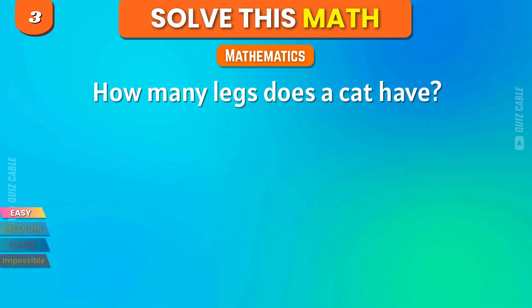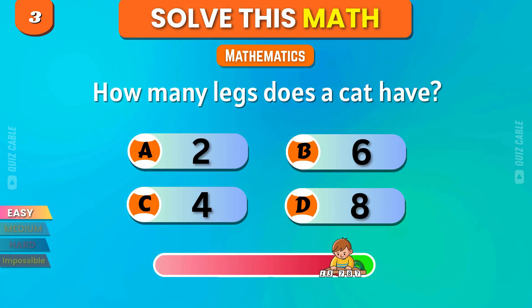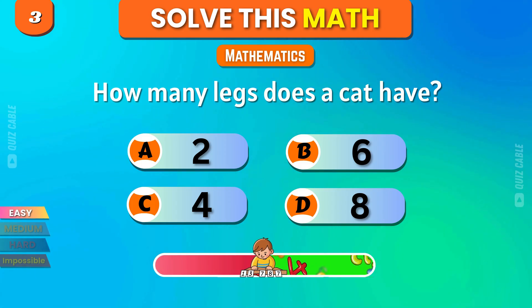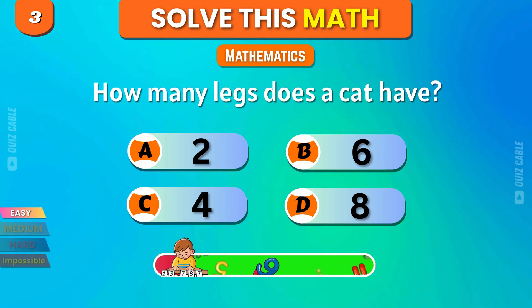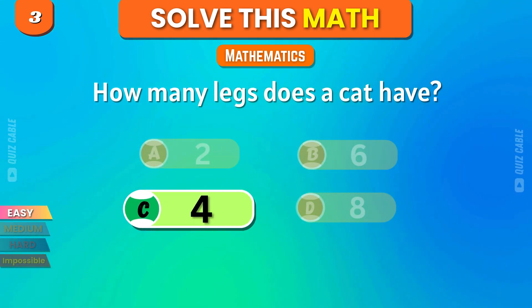How many legs does a cat have? 2, 6, 4, 8. Correct, 4. Easy win.